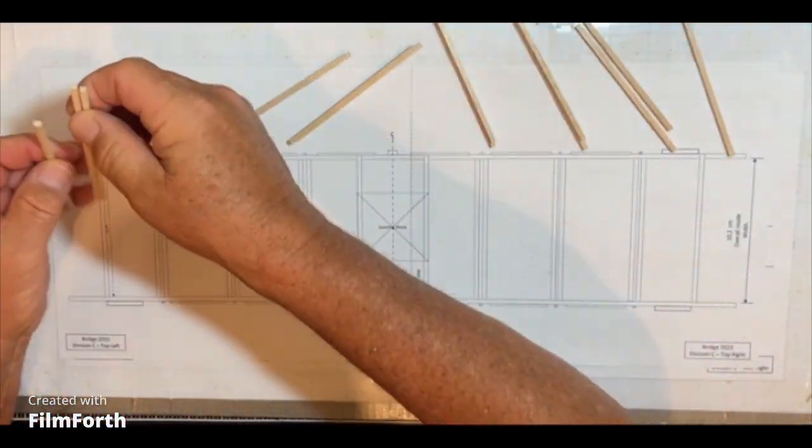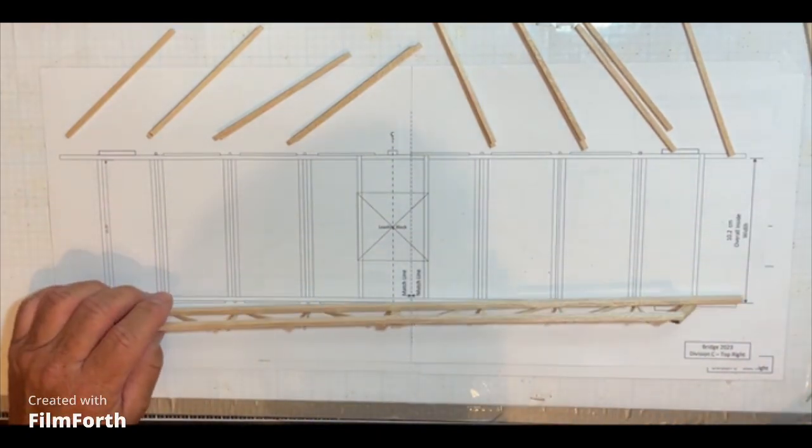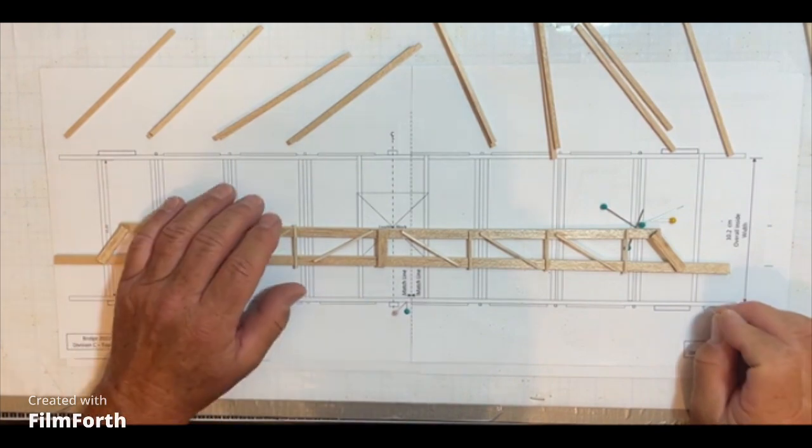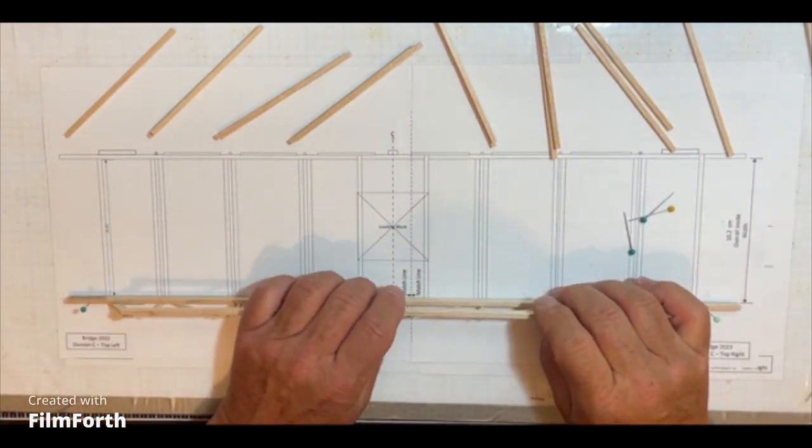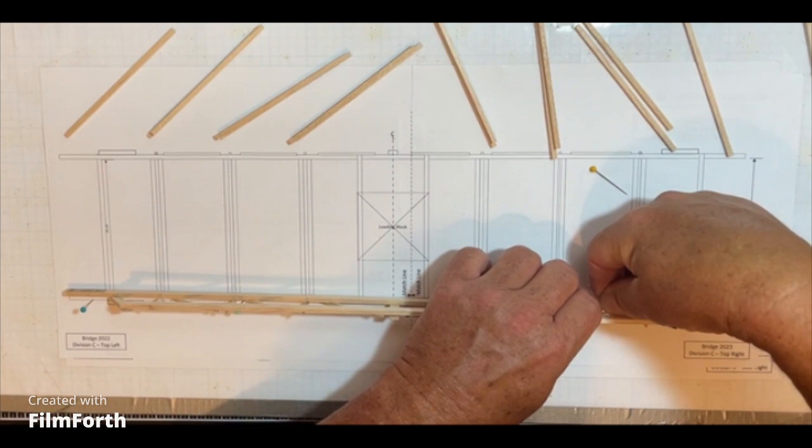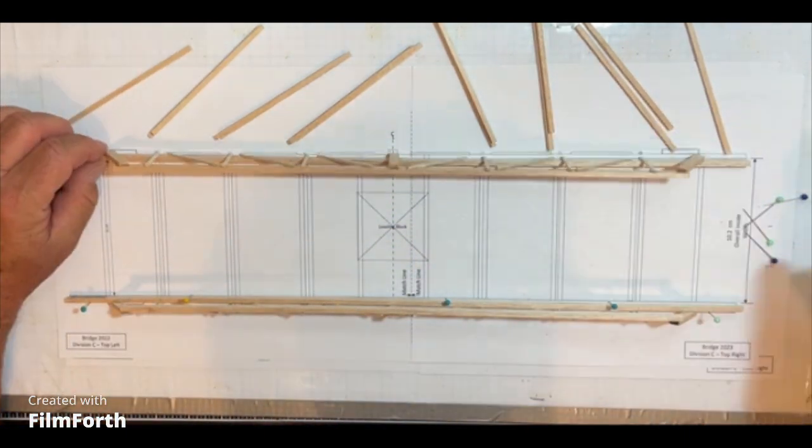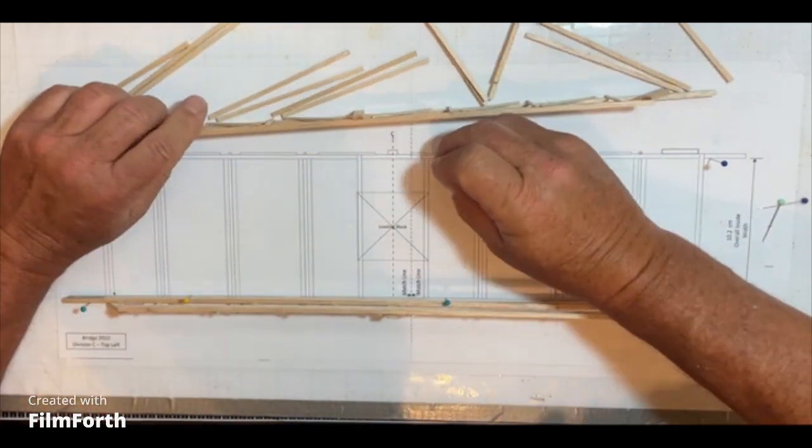You can see there's 14 cross members that hold the two trusses together. So now we'll pin both trusses down to the board using the template as a guide there, and putting the pins adjacent to the wood to line up the trusses on the bottom there and the trusses on the top.